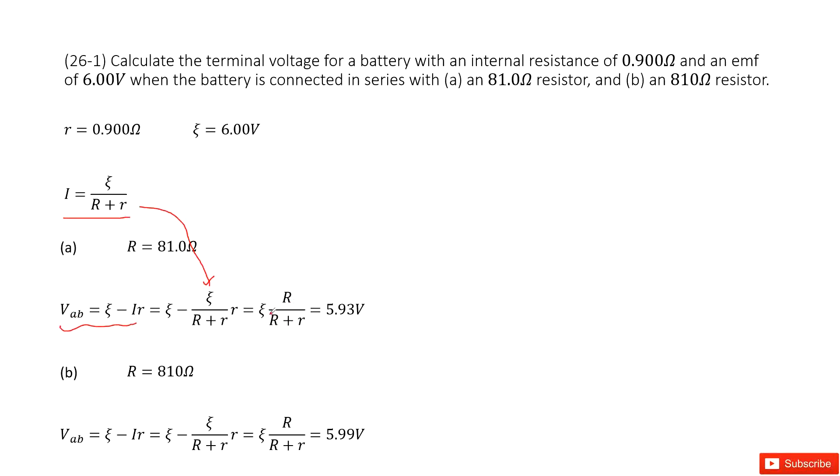Then we can input the given quantities epsilon, capital R, and small r to get the answer. Similarly, if the external resistance becomes 810 ohms, we do the exact same thing and just input capital R as 810 ohms to get the answer. Thank you.